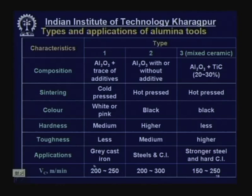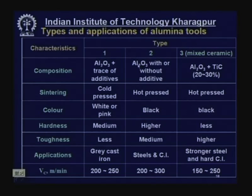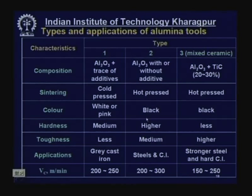Type 2 is alumina without additives — it should be white but becomes black due to hot pressing (simultaneous sintering and pressing at high temperature). Hardness is very good because of hot working. Toughness is medium, improved due to microstructure refinement. Application is for both steels and cast iron — it can withstand higher temperatures and larger forces.